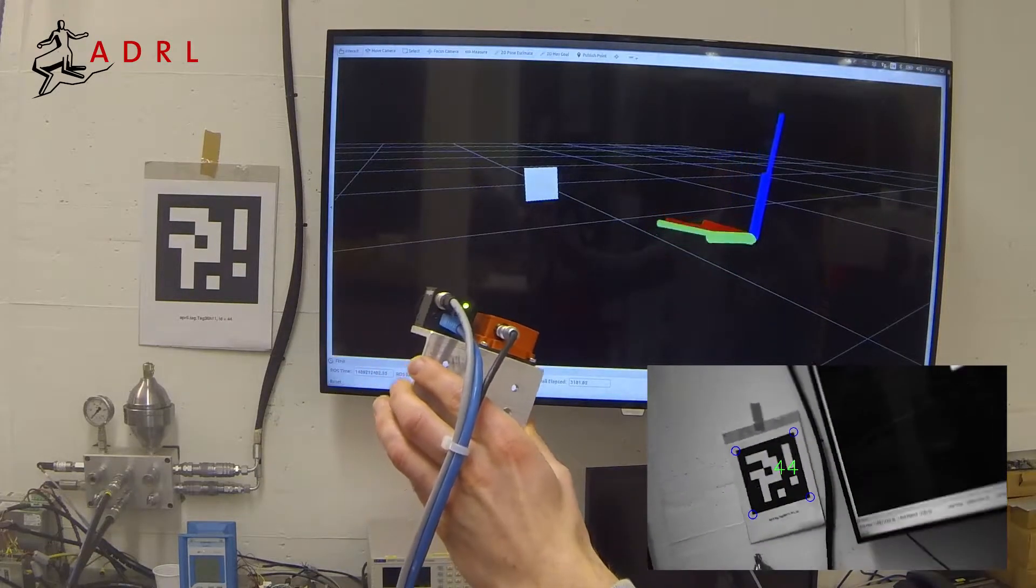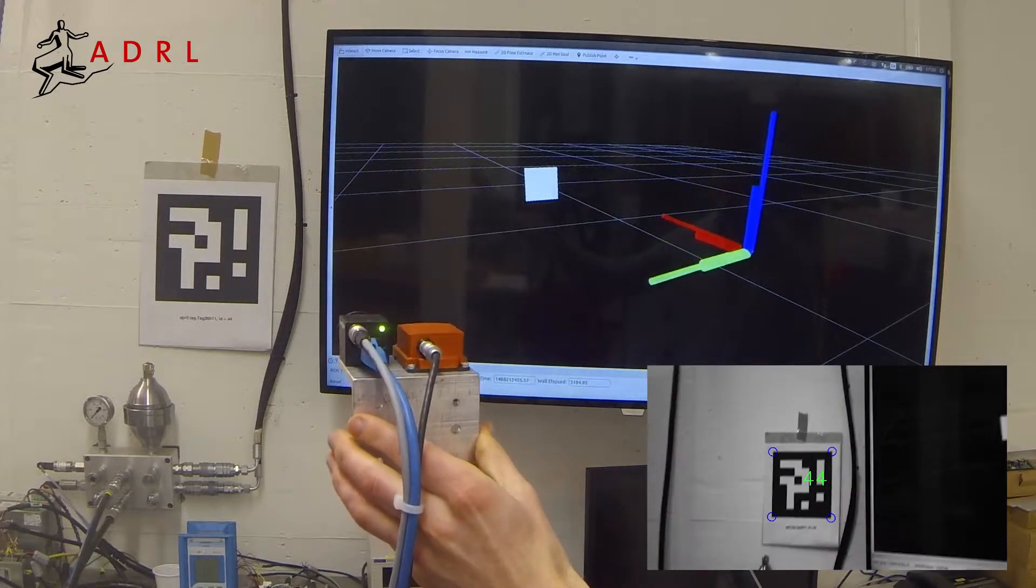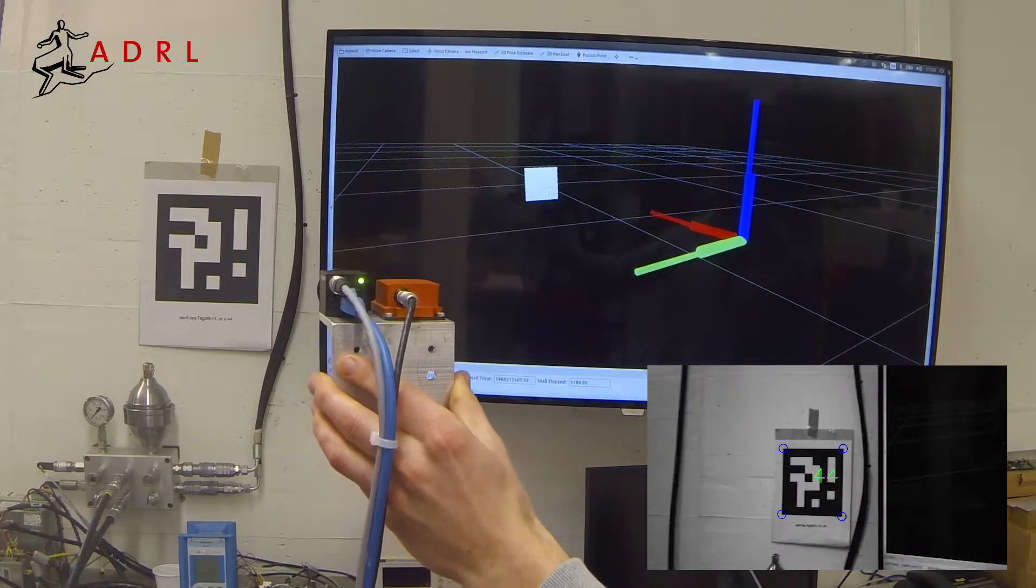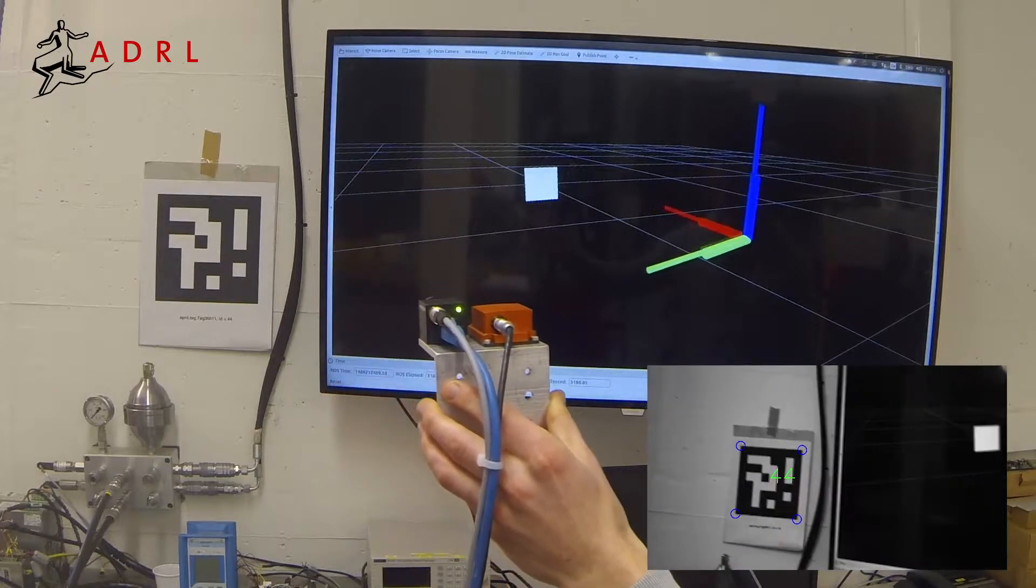As you can see, the visual measurements are significantly delayed and sparse in the presence of fast motion. Our sensing system can nevertheless generate smooth motion estimates.